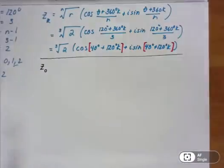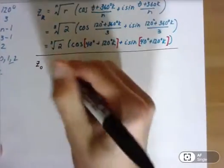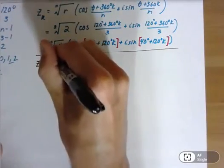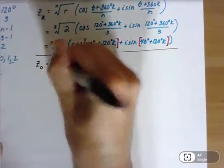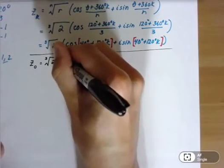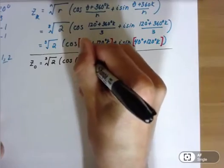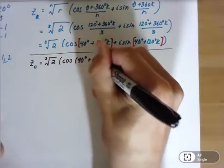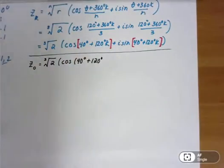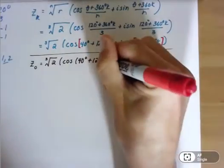All we need to do now is plug in what we need for k, which in this case is 0. So we're going to have the cube root of 2 times cosine of 40 degrees plus 120 degrees times 0, times 0.